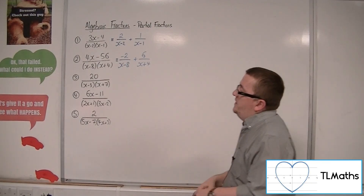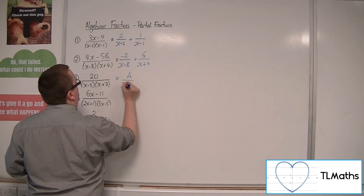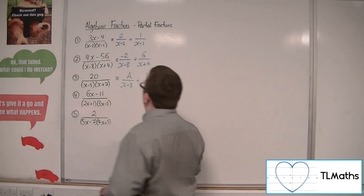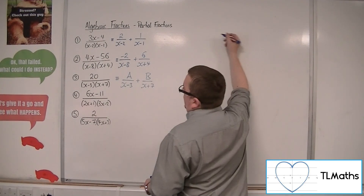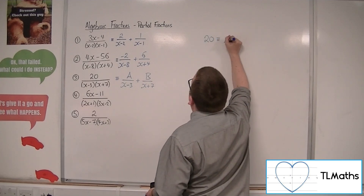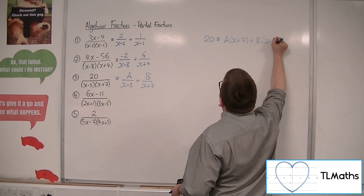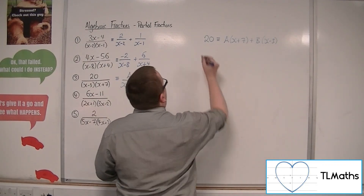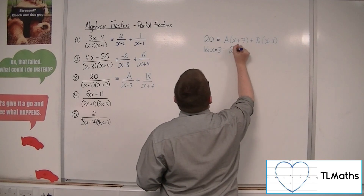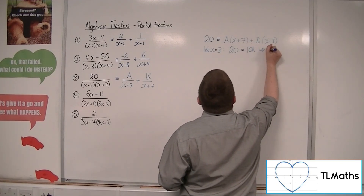Number 3: 20 over (x - 3)(x + 7). We want to write that as A over (x - 3) plus B over (x + 7). Multiplying both sides, 20 equals A(x + 7) plus B(x - 3). If we let x be 3, then 20 equals 3 plus 7, so 10A. So A must be 2.